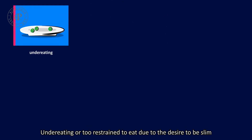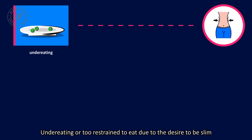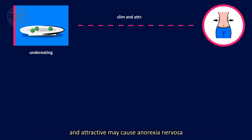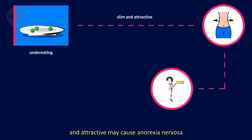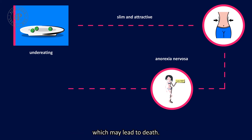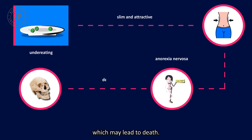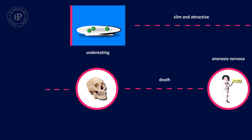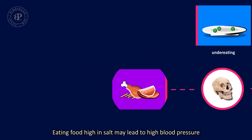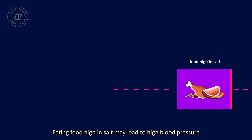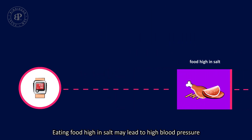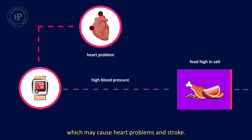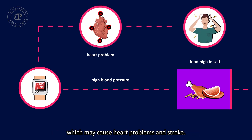Overeating may also cause anorexia nervosa, which may lead to death. Overeating food high in salt may lead to high blood pressure, which may cause heart problems and stroke.